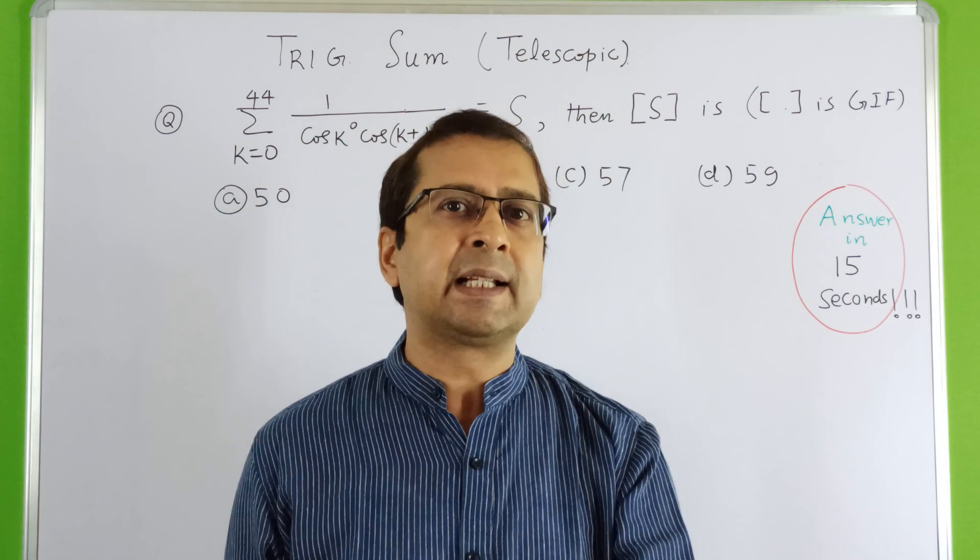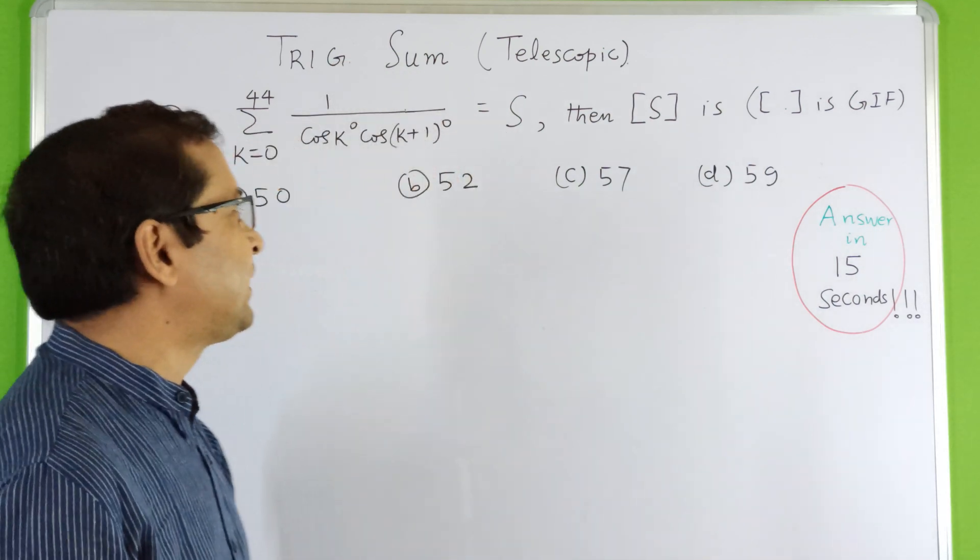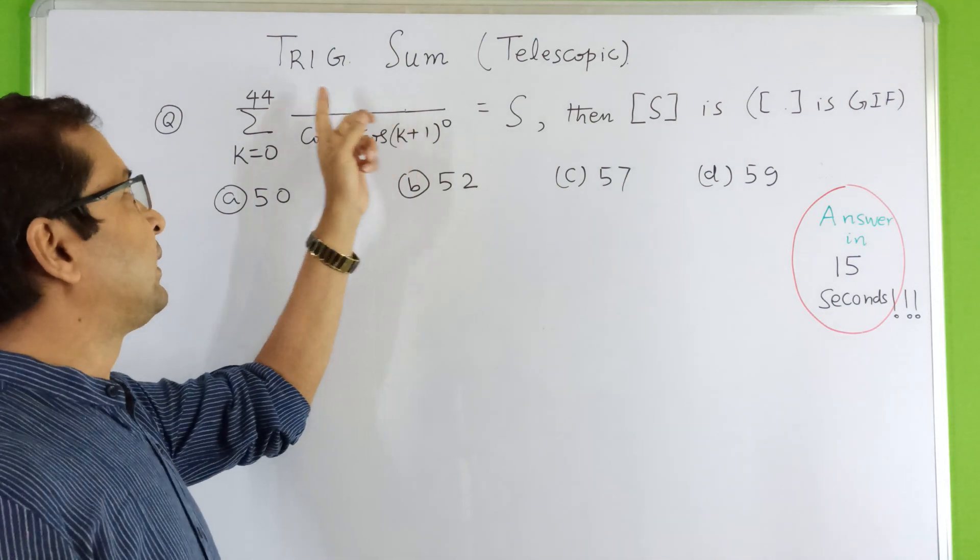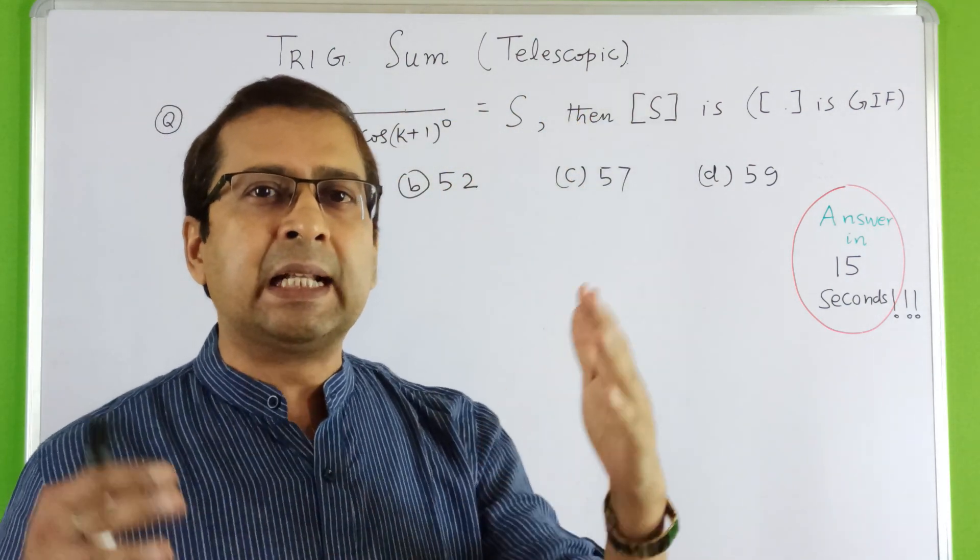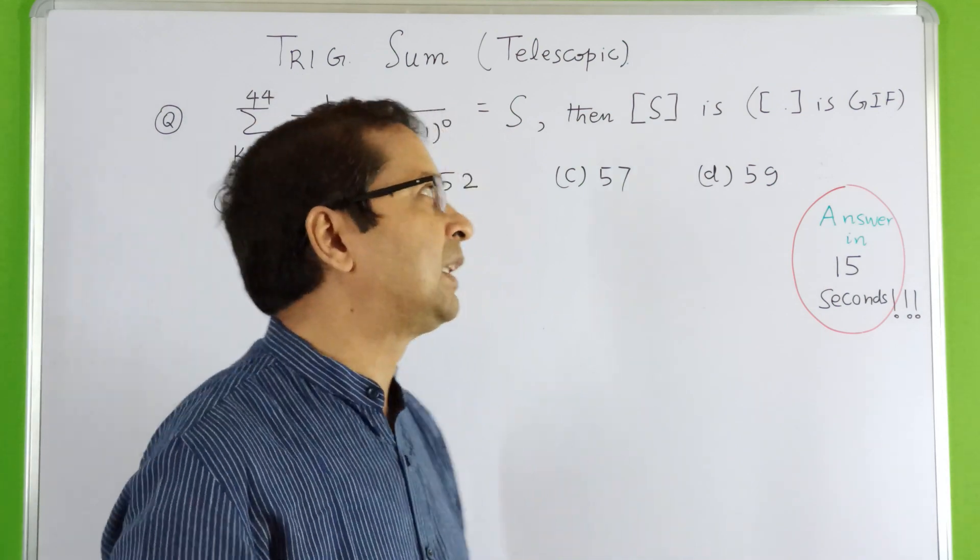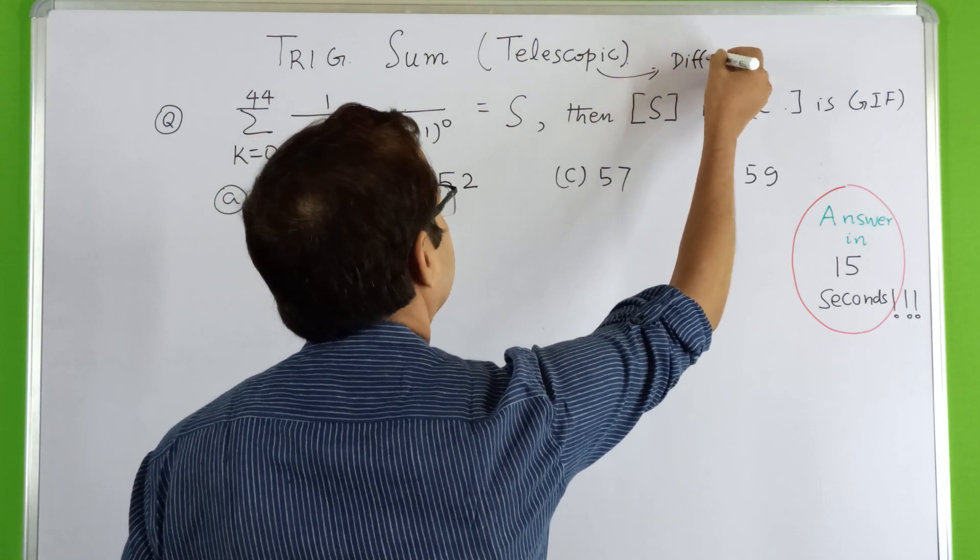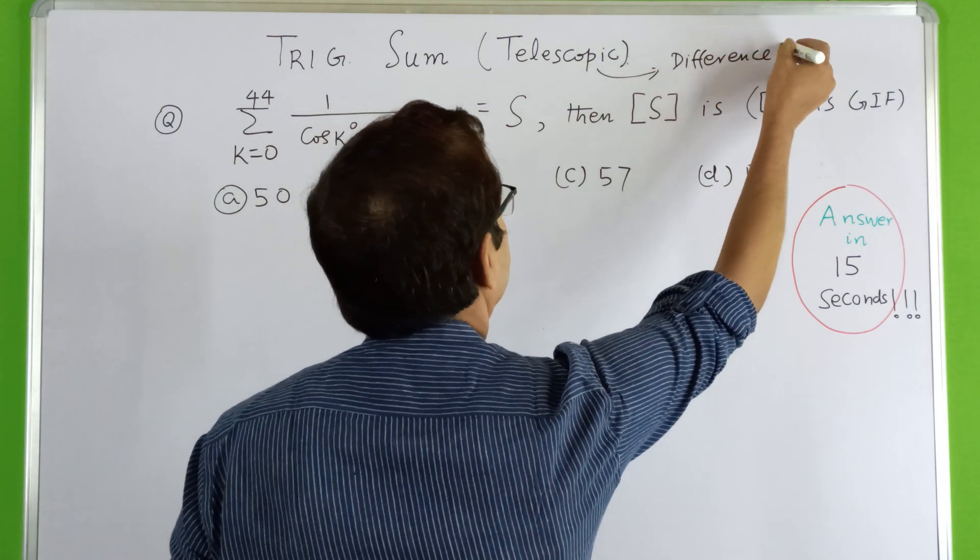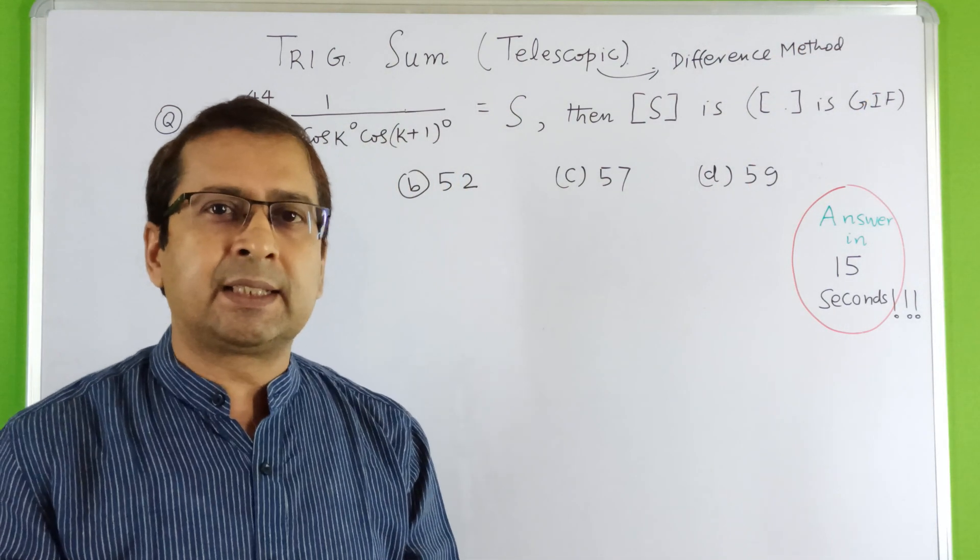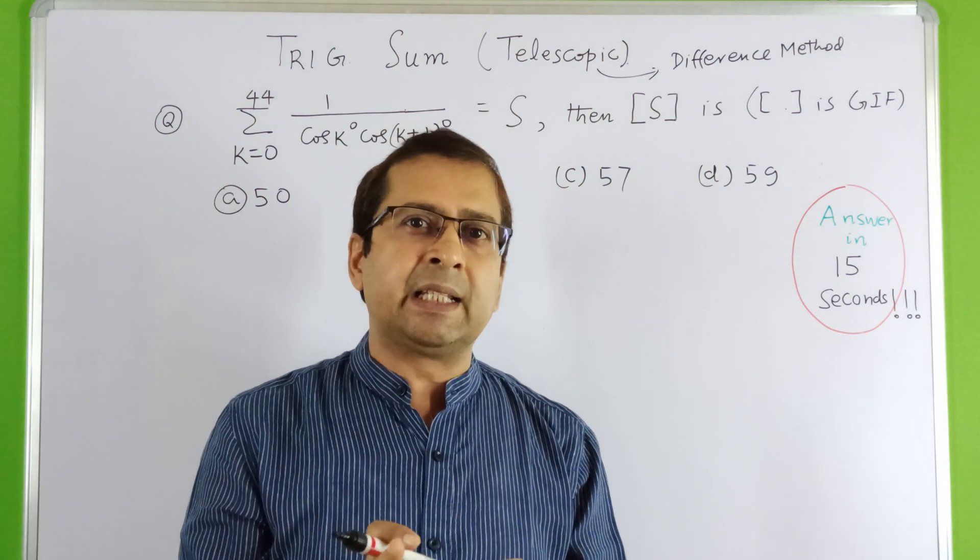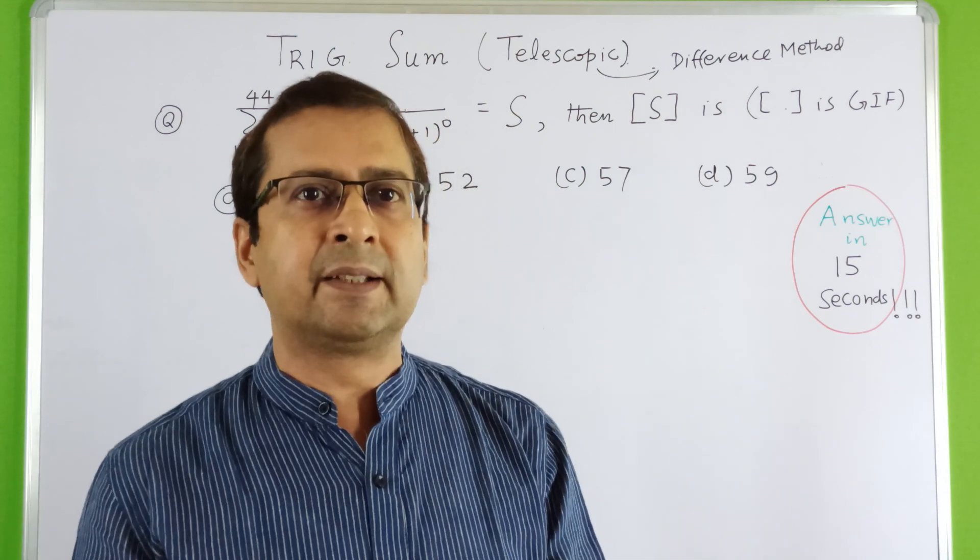Then I will explain the concept behind this problem. So let us start. We have a trigonometric sum, we call this telescopic. What is telescopic sum? Telescopic sum or method of difference. I will explain what is telescopic sum in very few lines and you might be able to understand all the concepts behind it.